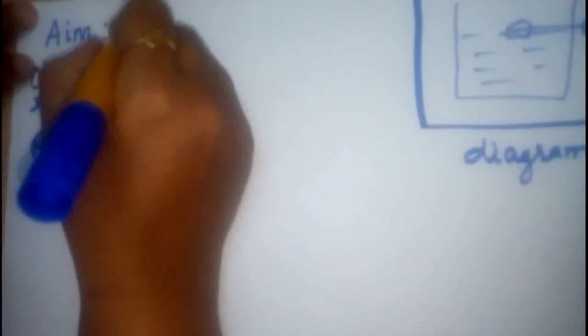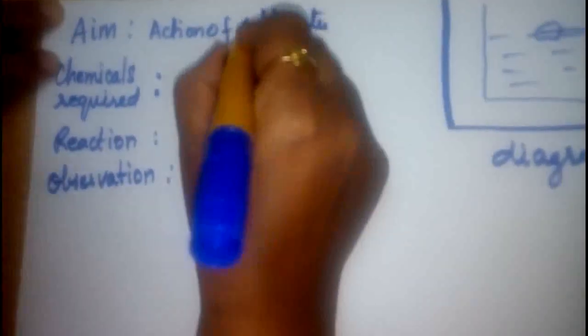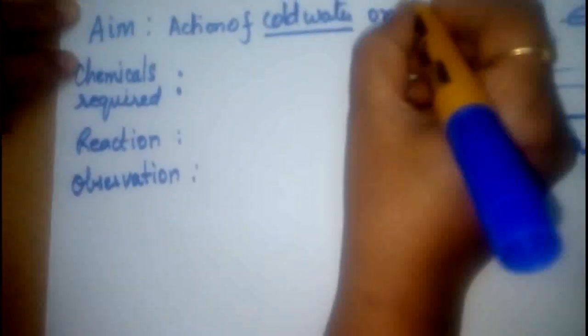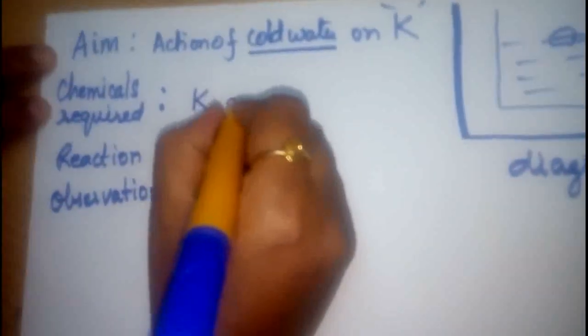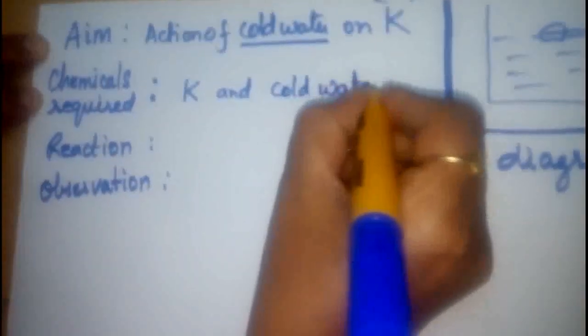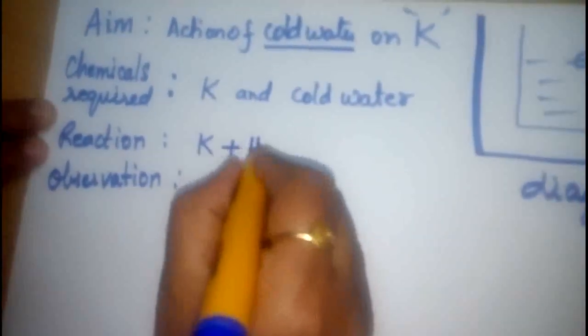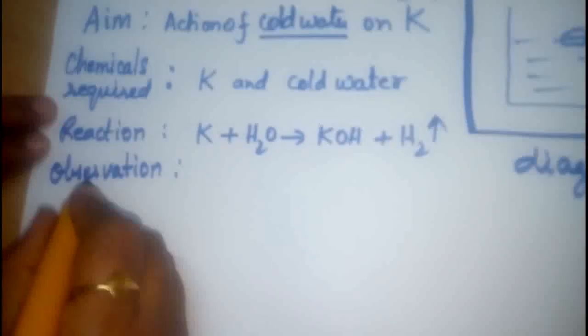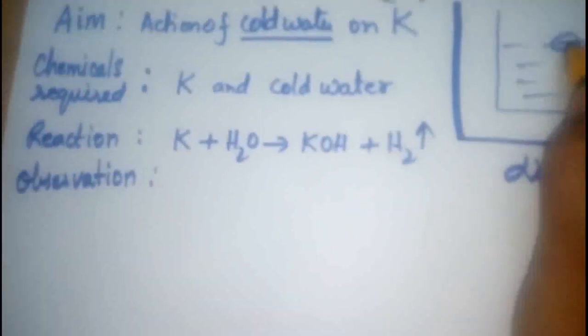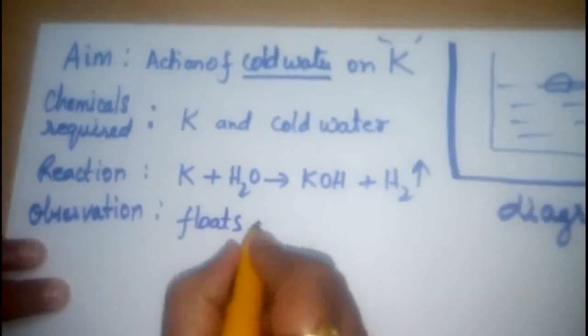Start with aim. For example, I will show you for potassium. The diagram is like this and then the aim. What is the aim of the experiment? Action of very important cold water on metal potassium. The chemicals required is potassium and cold water. The reaction is potassium reacts with cold water forming KOH and hydrogen gas is evolved.